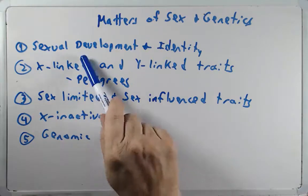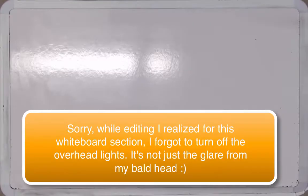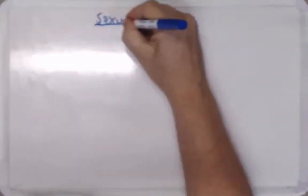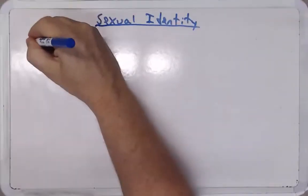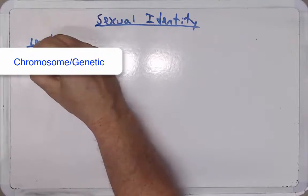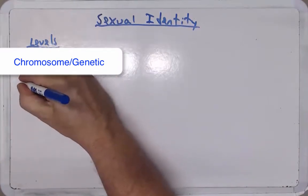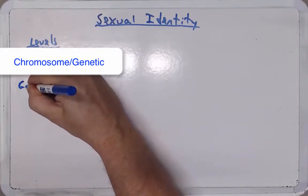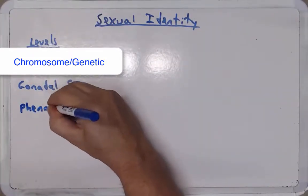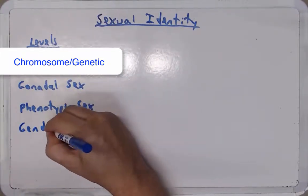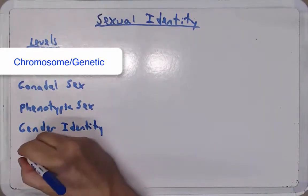Let's get started with sexual development. Before we do, I want to spend a little time talking about sexual identity, which we can interpret at different levels. We can think about it at the chromosomal level, the genetic level, the gonadal sex level, the phenotypic sex level, the gender identity level, and sexual orientation.